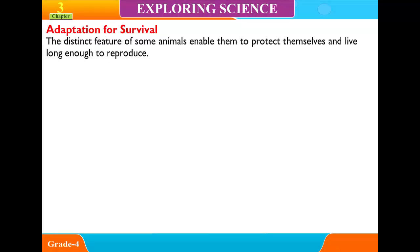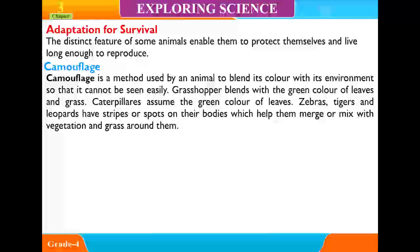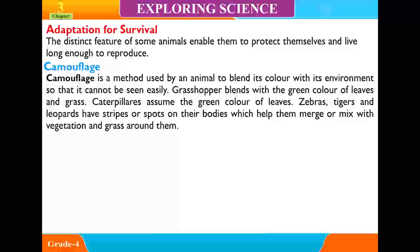Adaptation for survival. The distinct features of some animals enable them to protect themselves and live long enough to reproduce. Camouflage is a method used by an animal to blend its color with its environment so that it cannot be seen easily. Grasshoppers blend with the green color of leaves and grass. Caterpillars assume the green color of leaves. Zebras, tigers, and leopards have stripes or spots on their bodies which help them merge or mix with the vegetation and grass around them.